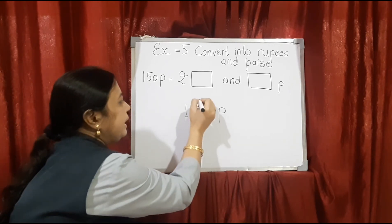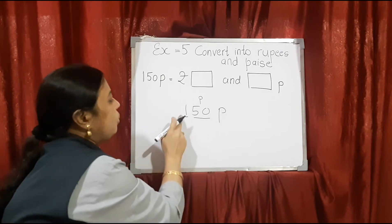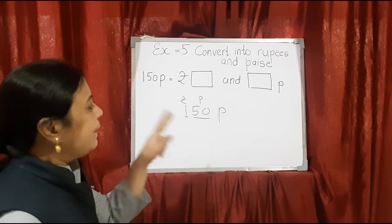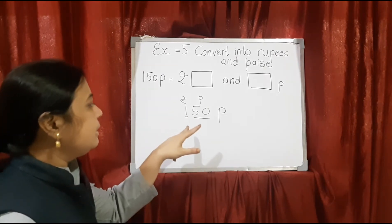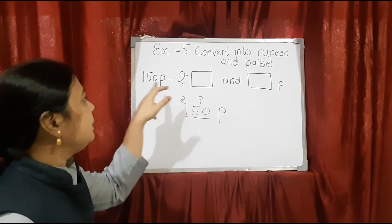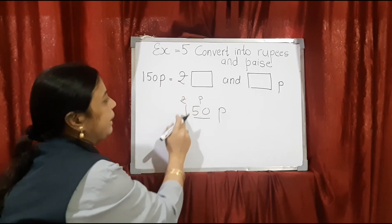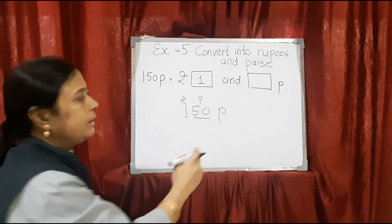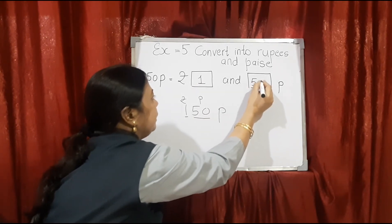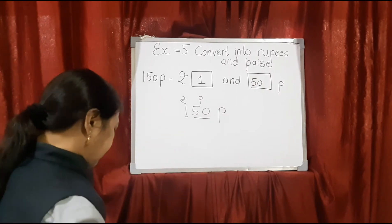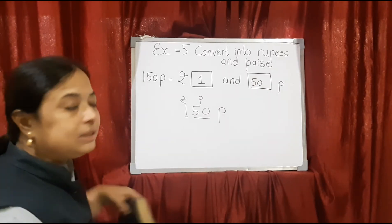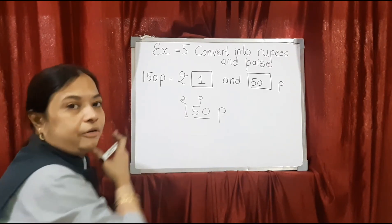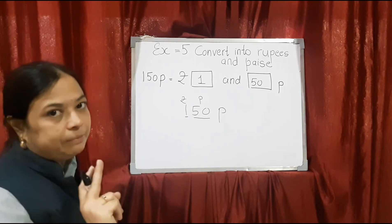So, the last 2 numbers show paise — yeh jo last 2 number hai na, wo humko paise dikhate hai — aur yeh wala jo yaha ka number hai, wo humko rupees dikhata hai. Whenever numbers are given in this way, to convert into rupees, just write down 1 rupee and 50 paise. The last 2 digits are paise and the rest — whether 1, 2, 3, or 4 digits — that is of rupees. Only the last 2 numbers will be of paise.